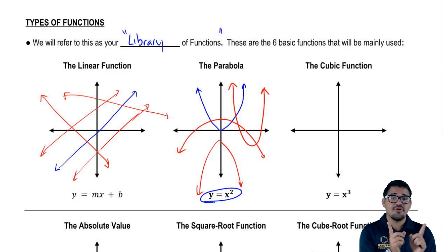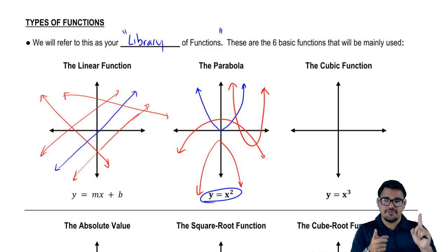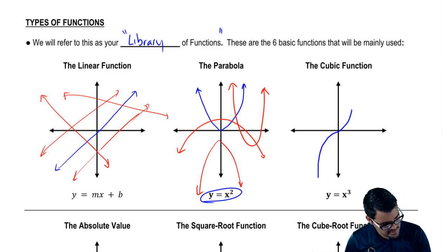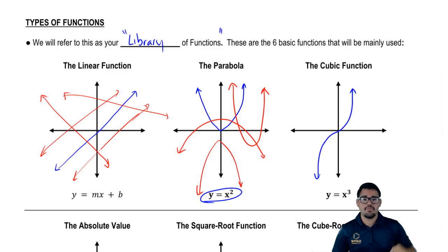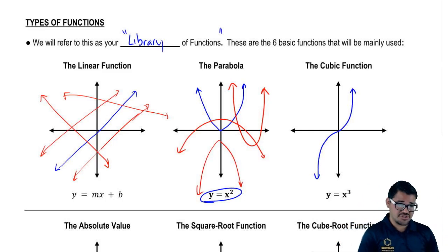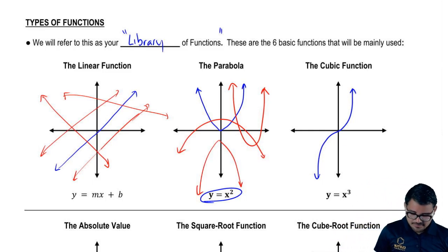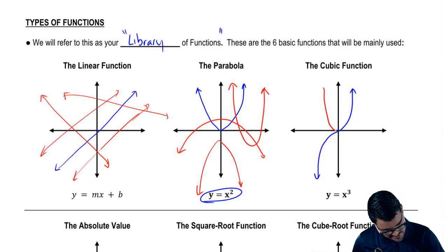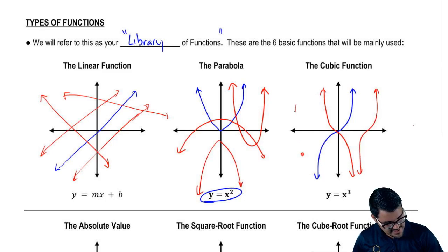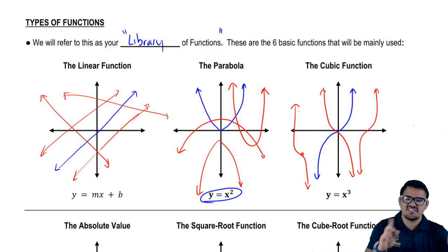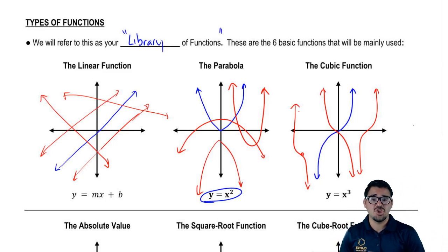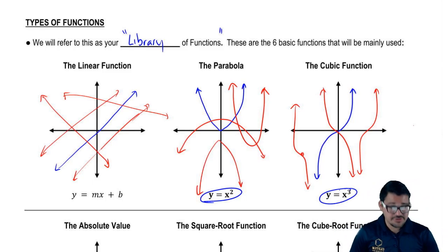What do you call it when the legs don't open the same way? When the right leg moves up and the left leg goes down, we call it our cubic function. Just like the parabola, the cubic function has variations — it can open in different ways. Whatever it is, it's a cubic function because its legs go opposite ways. We recognize this with the power of x to the 3, compared to the parabola which is x to the 2. Anything x to the 2 is a parabola; anything x to the 3 is a cubic function.